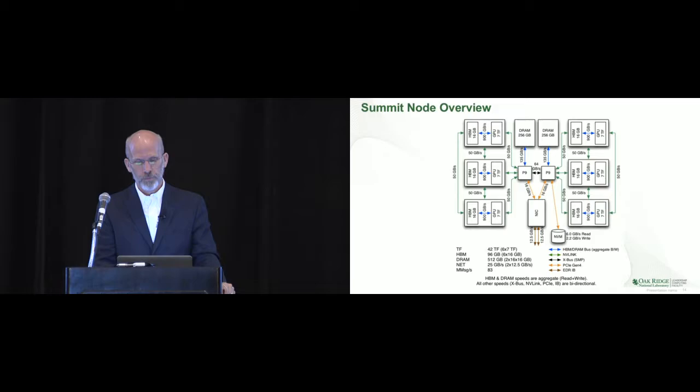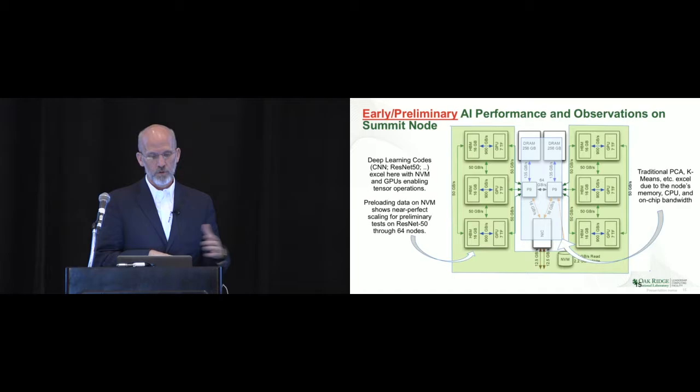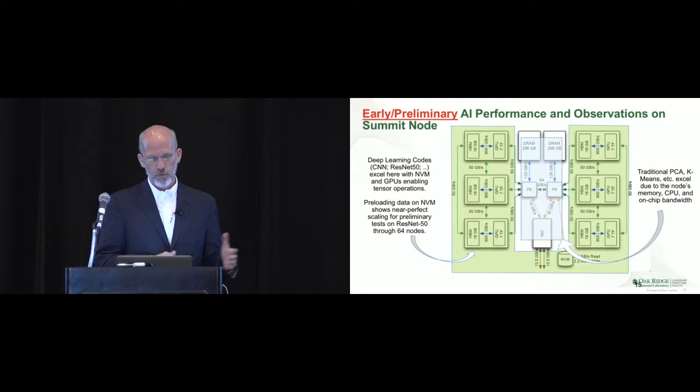From our advanced data and workflow group, our early preliminary observations on running these workflows on the Summit architecture show that deep learning codes—like convolutional neural networks and ResNet 50—excel on the GPUs, and with the non-volatile memory are enabling tensor operations very efficiently. Preloading the data on the non-volatile memory shows near-perfect scaling for preliminary data sets on ResNet through about 64 nodes.